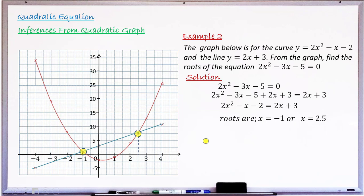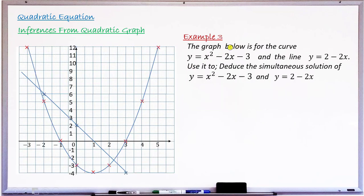Example 3: the graph below is for the curve y = x² − 2x − 3, and another line y = 2 − 2x is also drawn. The question asks to deduce the simultaneous solution of the quadratic and the linear equation. To answer this, simply find the points of intersection of the curve and the line — there are two such points.